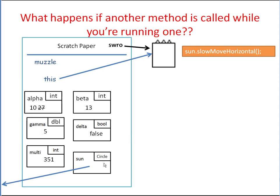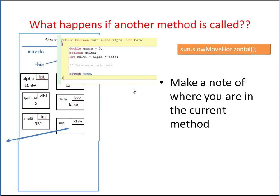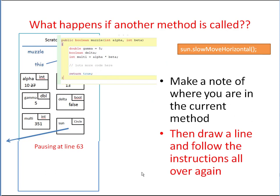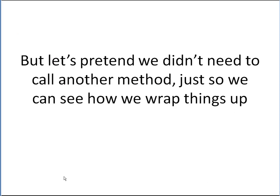Now let's suppose that while we're in here, there's a line of code that wants to run another method. We have a local variable called sun of type Circle pointing to an object off-screen. We want to run the slowMoveHorizontal method on the sun object while currently in muzzle. So we write down that we've paused muzzle at, say, line 63, then go back to the beginning of the process: draw the line, write the new method name — slowMoveHorizontal — and keep going. While in there, we can't look at anything above the line.